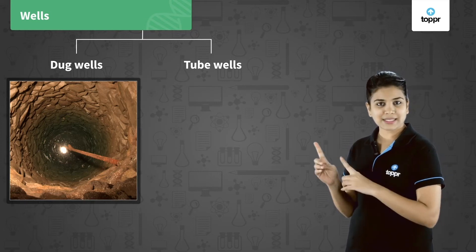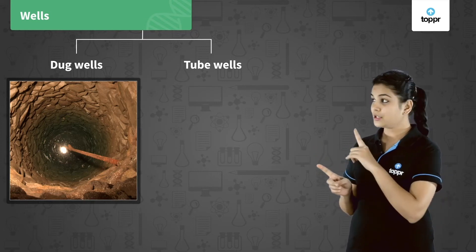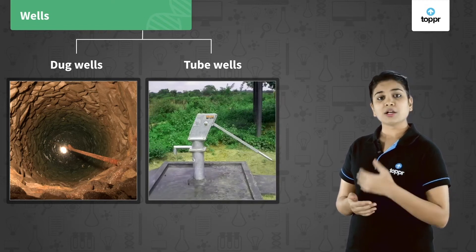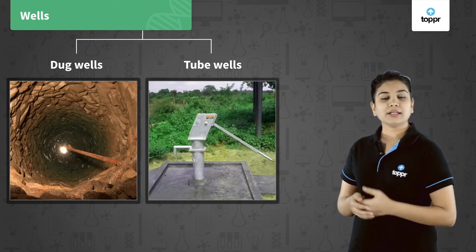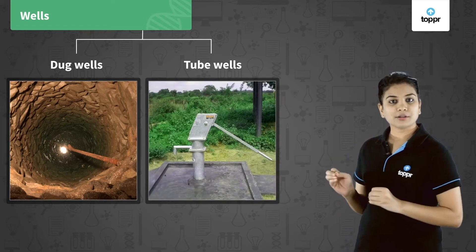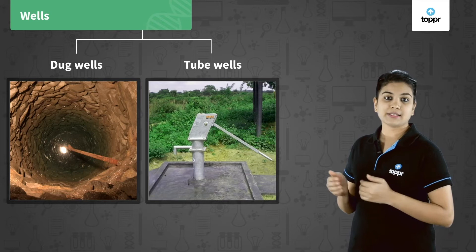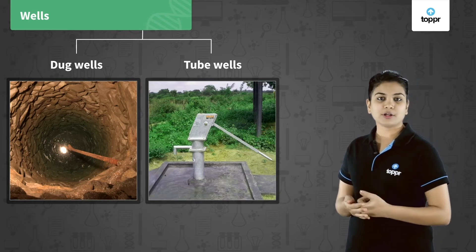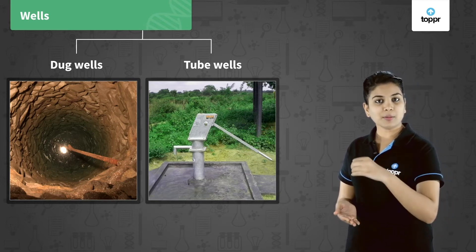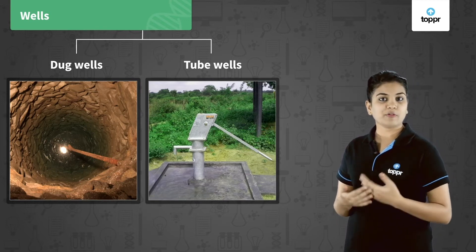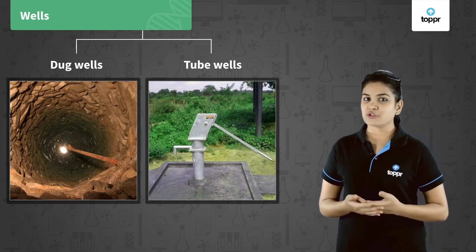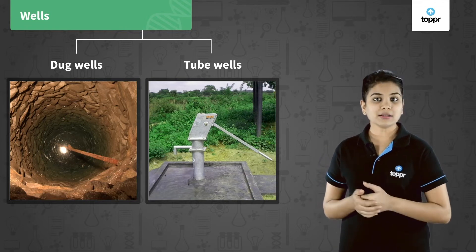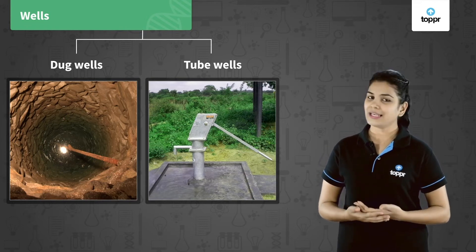The second type is the tube well. A tube well taps water from the deeper layers in the ground, and this water is lifted up with the help of pumps which run with the help of diesel or electricity.